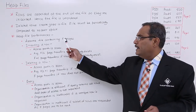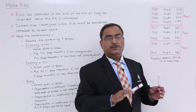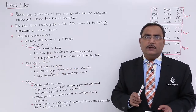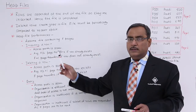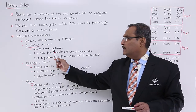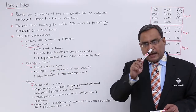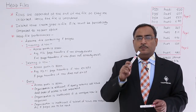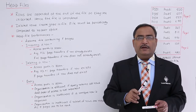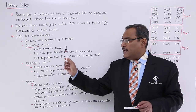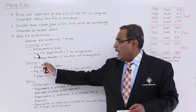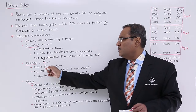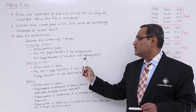Let us suppose we are having f pages — as we have 3 pages in this example. Now we consider inserting a row into the heap file. The access path is scan, meaning I shall have to scan sequentially through the heap file to make one entry at the end. On average, f/2 page transfers are needed if the row already exists, or f+1 page transfers if the row does not already exist.